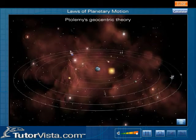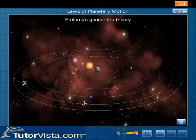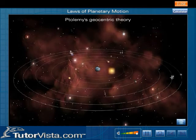Ptolemy's Geocentric Theory proposes that the immobile Earth is at the center of the universe, around which the planets, the moon, the sun, and the stars revolve.